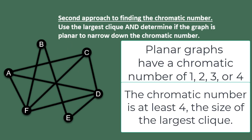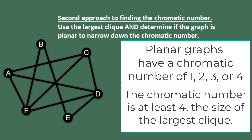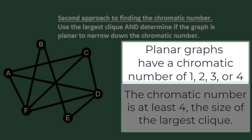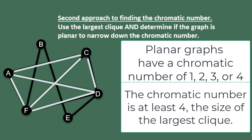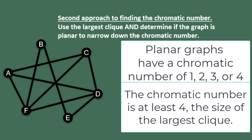One of the nice things about this approach is that you can come up with a sample schedule — though it's not the only one. There may be other 4-colorings you could use. However, there is a second approach which would just tell you the number of time slots needed. The second approach is to use the largest clique to determine the minimum chromatic number, then determine if the graph is planar to narrow it down further. If the graph is planar, the chromatic number can only be 1, 2, 3, or 4. We already know the largest clique is size 4, so the chromatic number is at least 4.